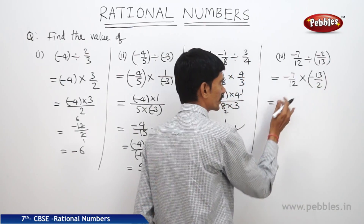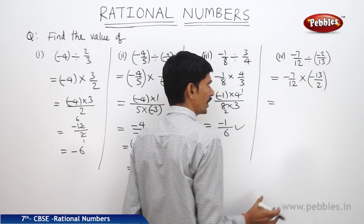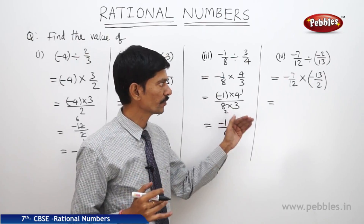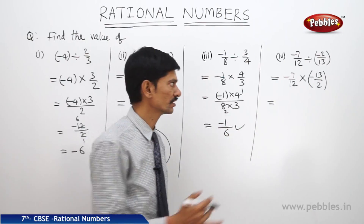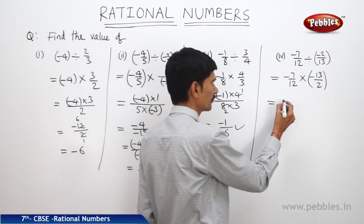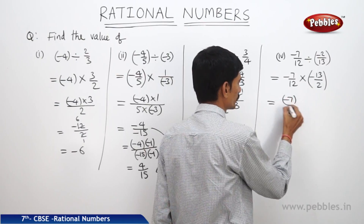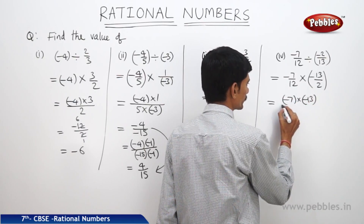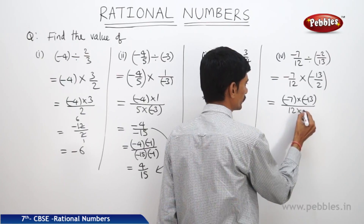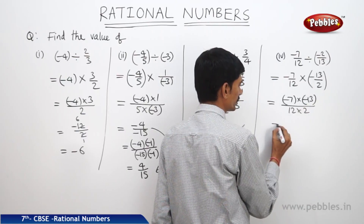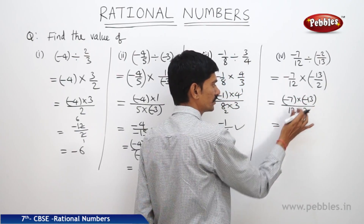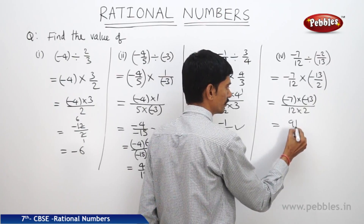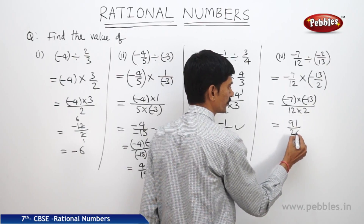Now this equals, while multiplying two rational numbers, we must multiply both numerators and both denominators. So this equals minus 7 into minus 13 divided by 12 into 2. This gives plus 91 by 24, since minus into minus is plus and 7 thirteens are 91 and 12 twos are 24.